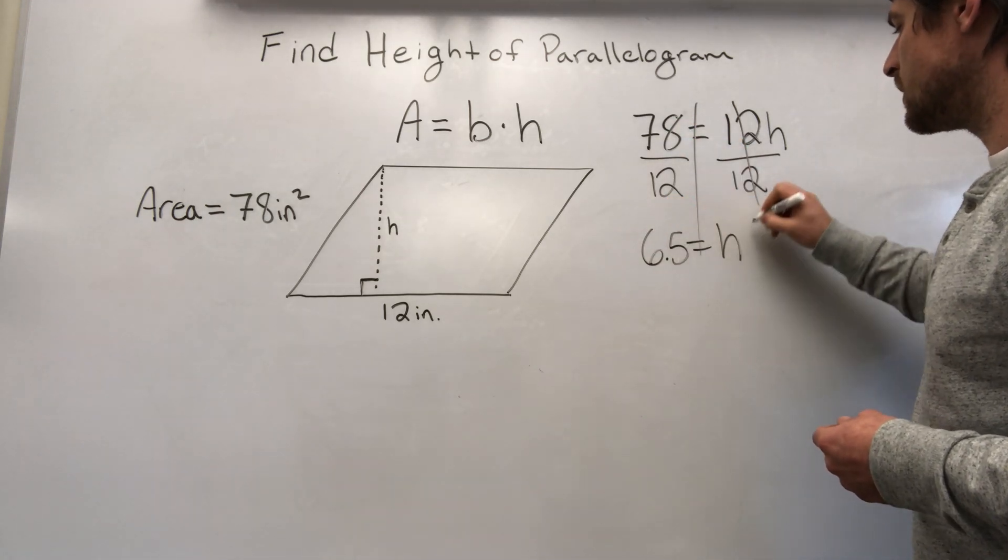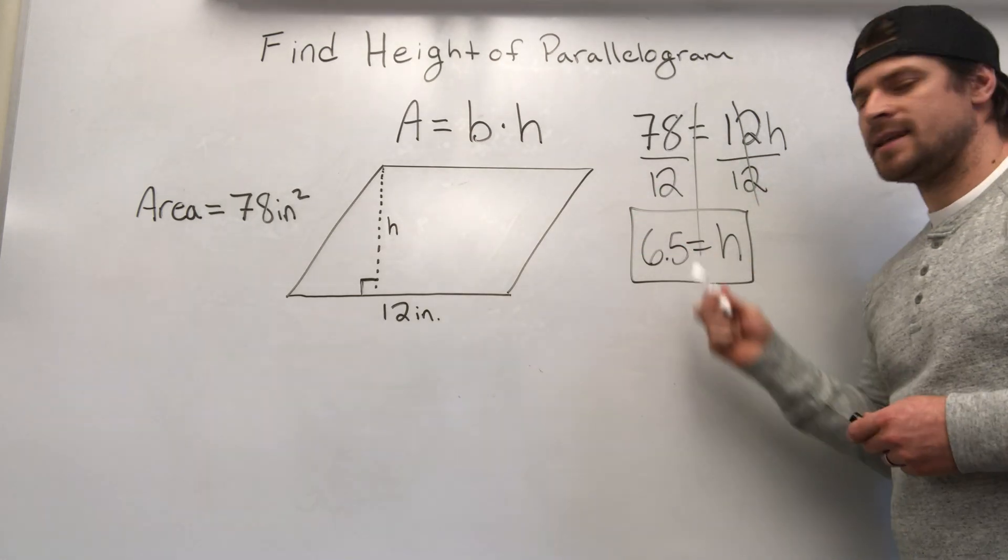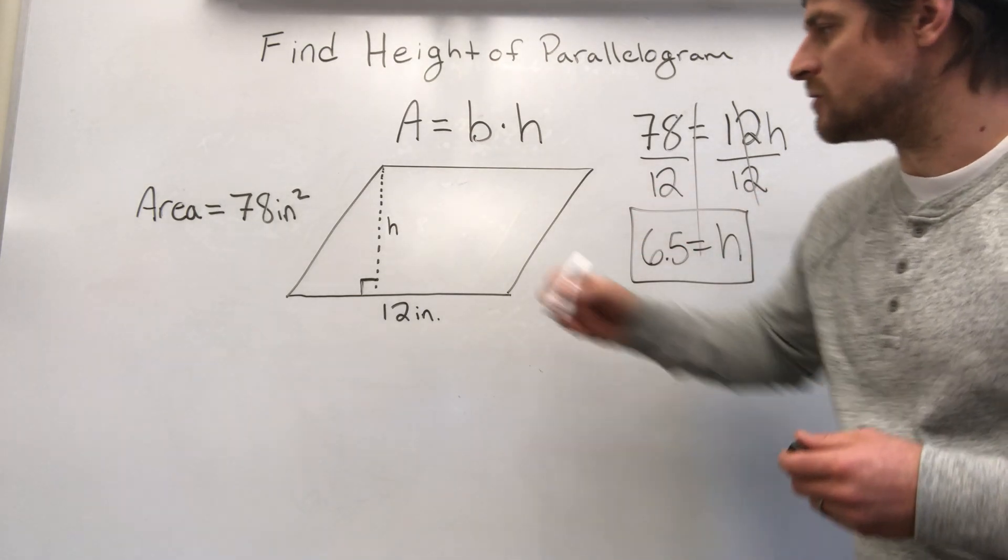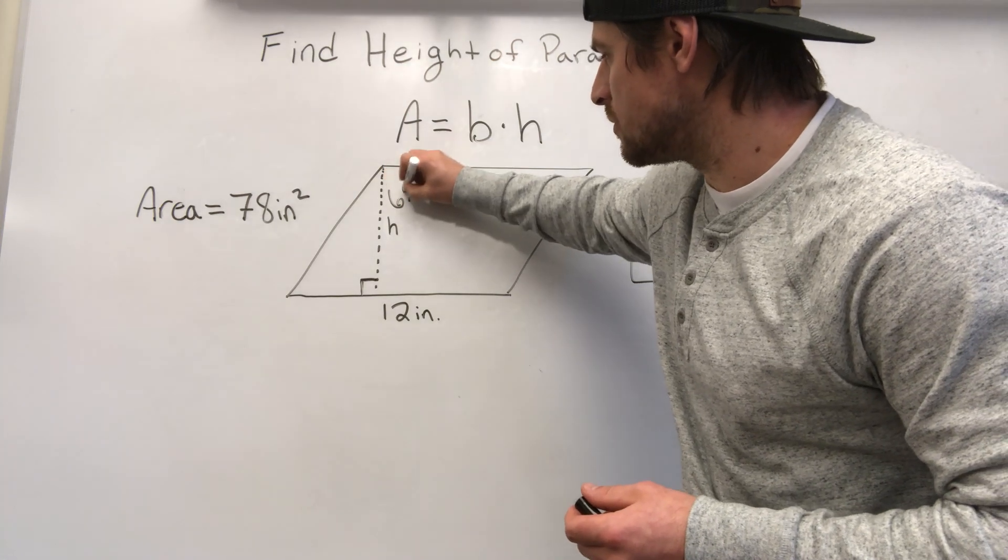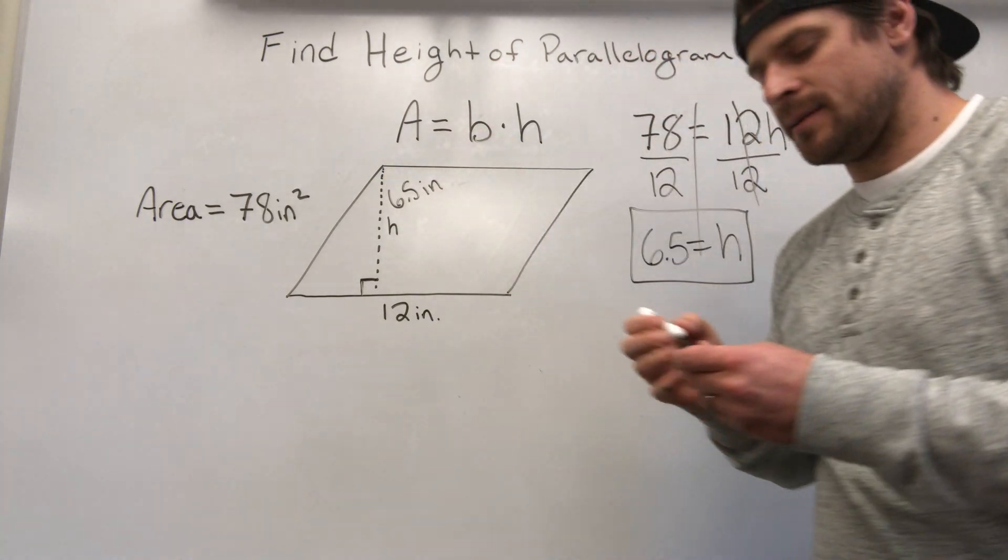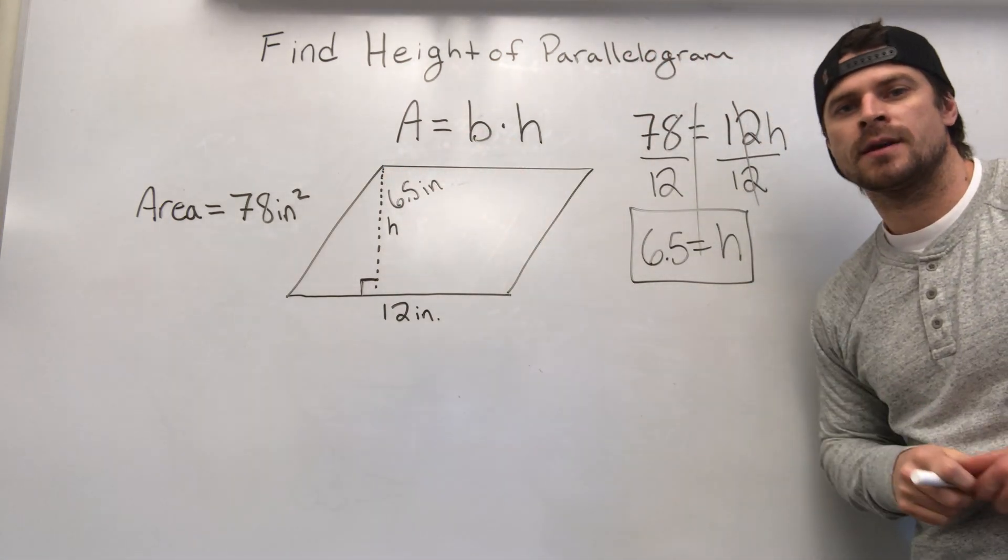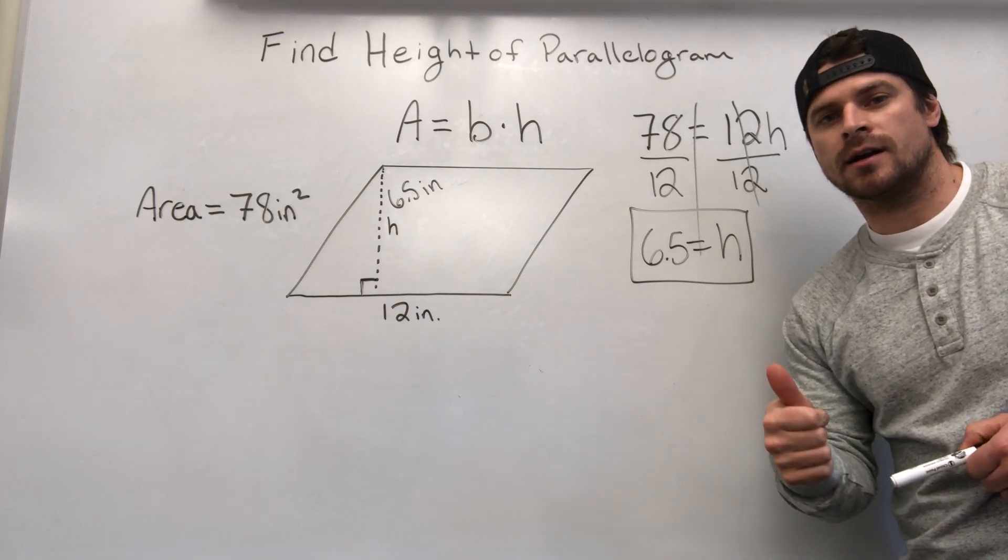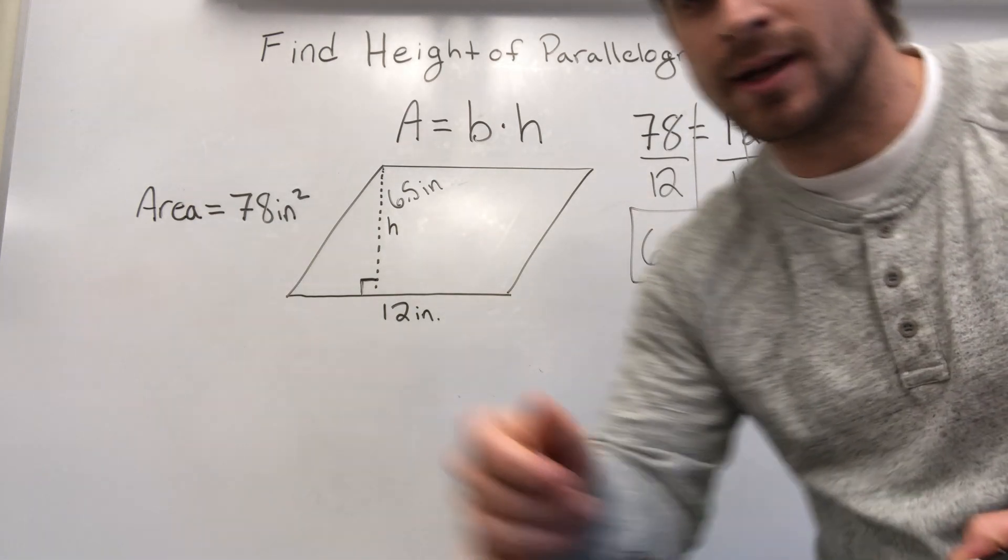And now we know what h is. Our height is 6.5 inches. So you could go back into the problem and label it with a given value. Study hard and good luck on your upcoming test. You got this. Let's go.